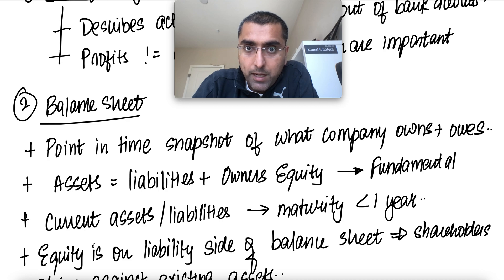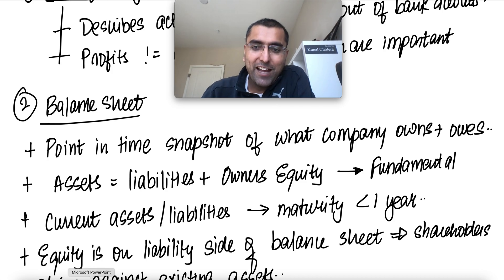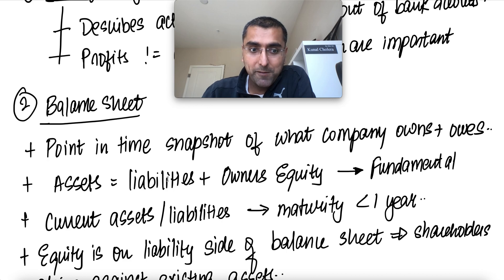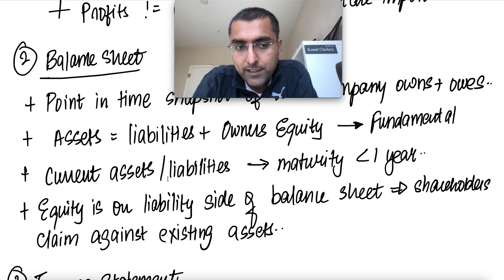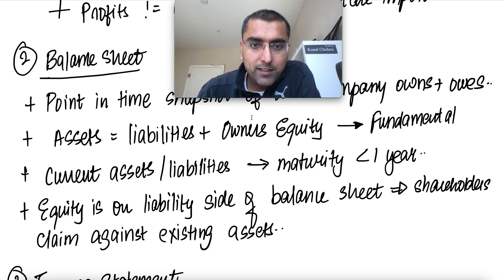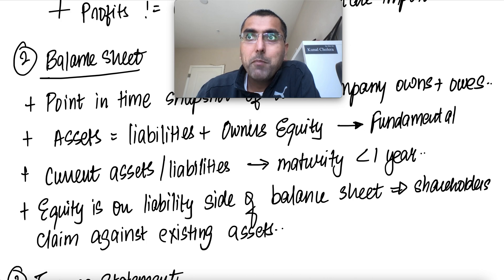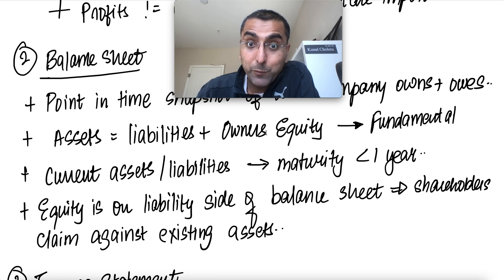The balance sheet is a point-in-time snapshot of what the company owes and what it owns. We have the fundamental equation: assets equals liabilities plus owner's equity, and they must always balance. Current assets and current liabilities are things that mature in less than a year. Equity is on the liability side — it represents a claim that shareholders have on existing assets.